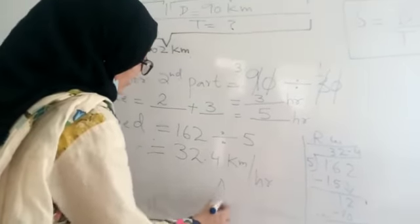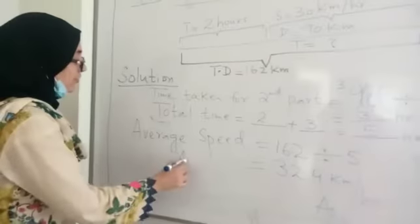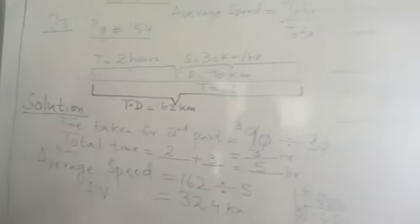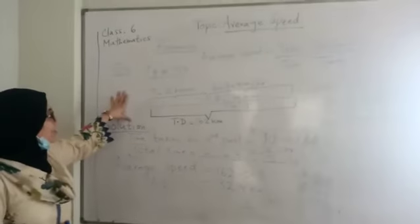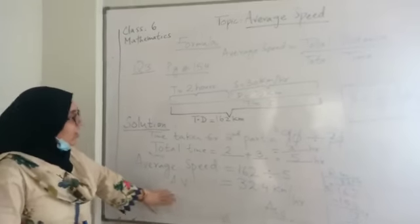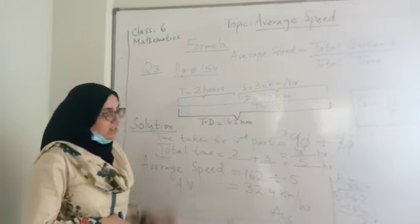So this is the answer of average speed when you are given the distance and time. I hope you understand this question and you will just revise it and go through it from the book. Here I have explained you and inshallah in next class I will explain you the next thing. Take care.